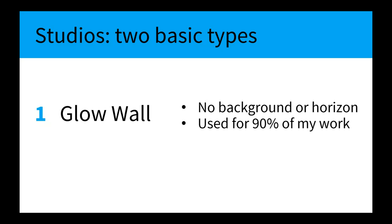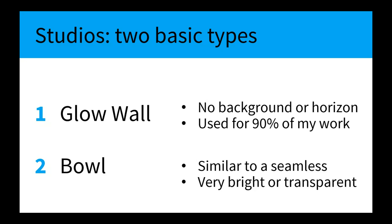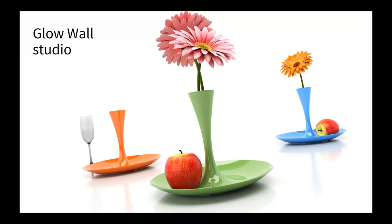The bowl studio helps when your materials or design is very bright or transparent. Here are some examples. This is the glow wall studio — you'll notice there's an environment, but it takes a back seat to the design. We see a floor because there's a reflection, but I keep it soft, blurry, and it fades away. We don't see the edge of any table or the background, which makes for much better presentations — you can put text right on top.